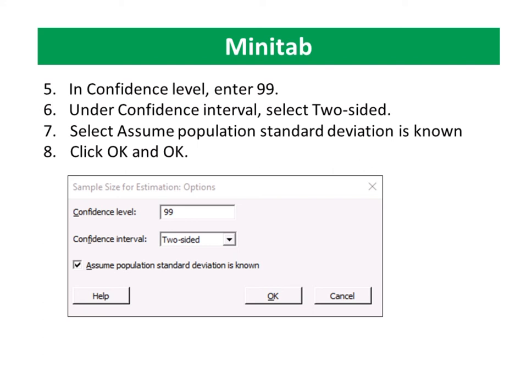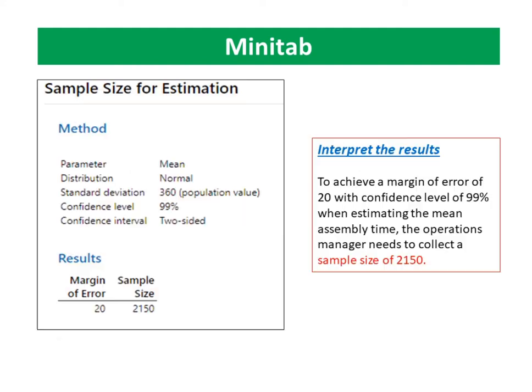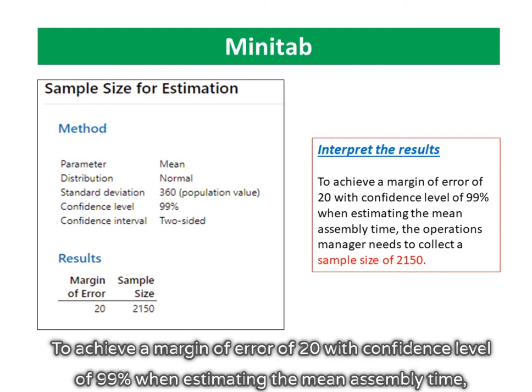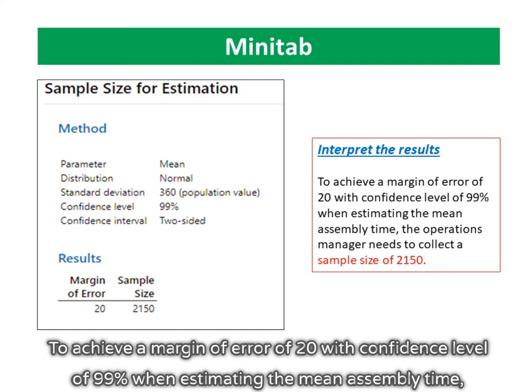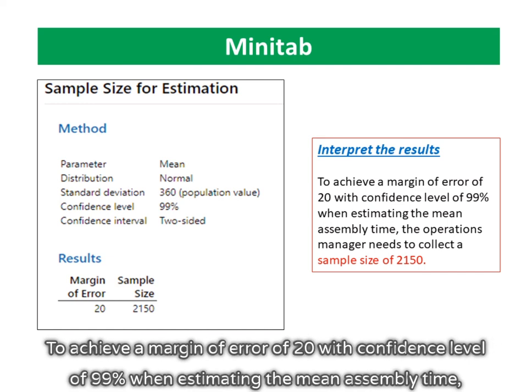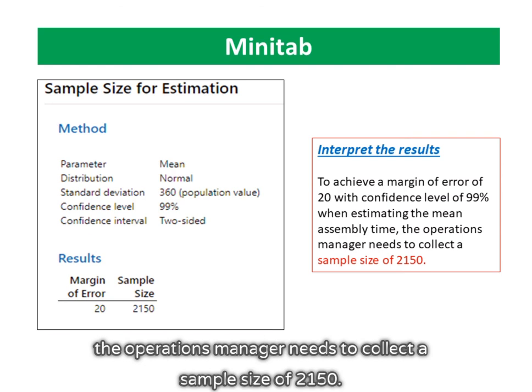Select Assume Population Standard Deviation is Known. Click OK and OK. To achieve a margin of error of 20 with confidence level of 99% when estimating the mean assembly time, the operations manager needs to collect a sample size of 2150.